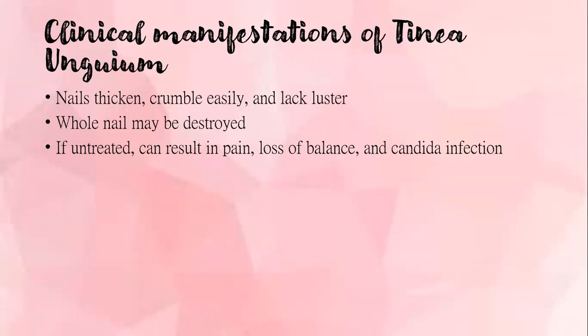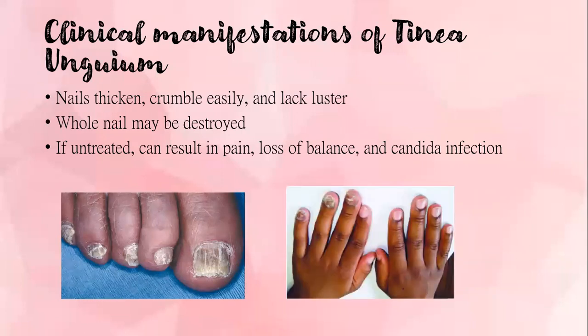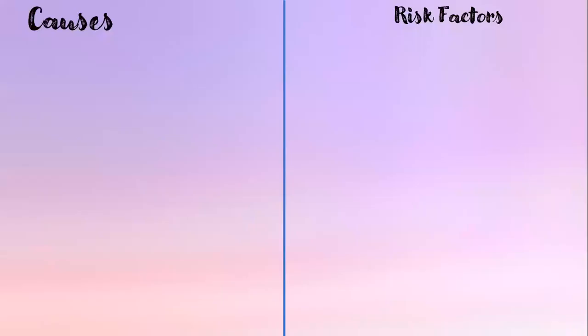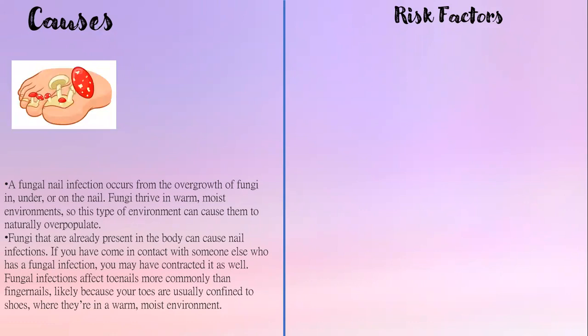For clinical manifestations of tinea unguium, nails are thickened, crumble easily, and lack luster. The whole nail may be destroyed, and if untreated it can result in pain, loss of balance, and candida infection. It occurs from overgrowth of fungi in, under, or on the nail. Fungi thrive in warm, moist environments and can naturally overpopulate. Fungi already present in the body can cause nail infection, and contact with someone who has a fungal infection may result in contraction as well.